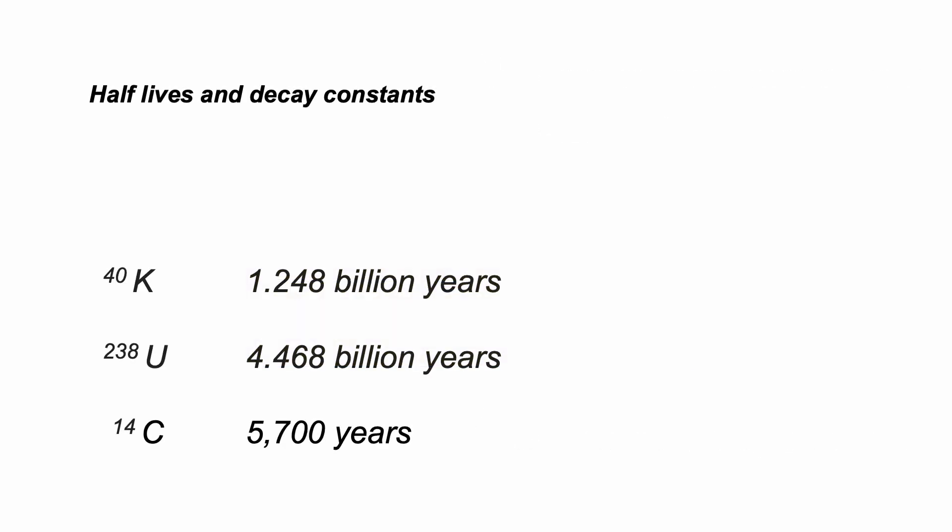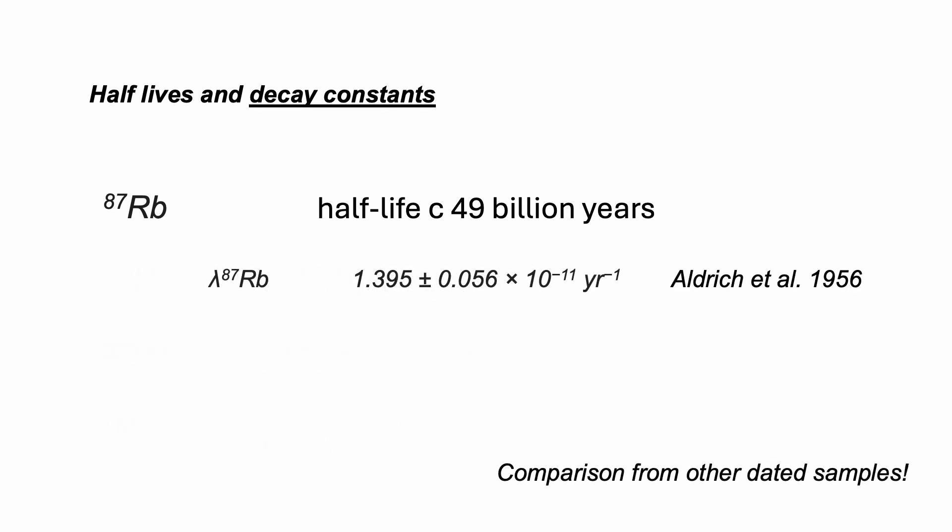These are half-lives of commonly used geochronometers. In this film, we'll be using 87 rubidium, which has this huge half-life of nearly 50 billion years. This equates to a tiny decay constant, the probability of any particular atom of 87 rubidium decaying in the course of a year.